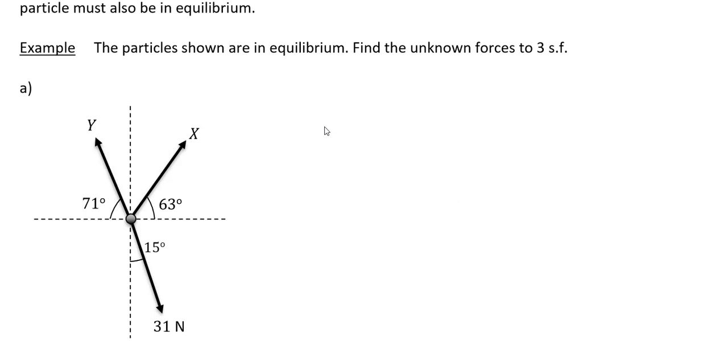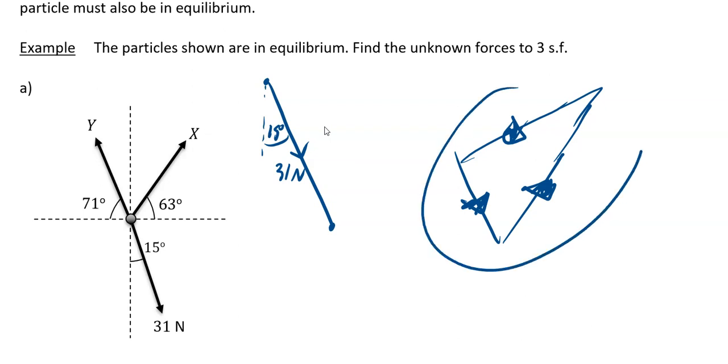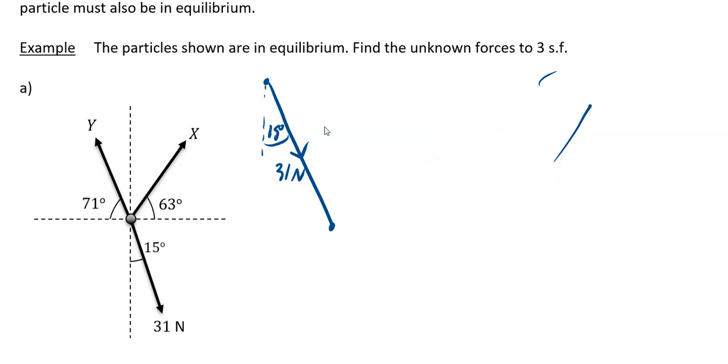I'm going to start by drawing my 31 Newton force. It acts with the vertical, it acts down this way at 15 degrees. That was my 31 Newtons. The arrows, remember if it's in equilibrium, the arrows have to be consistent. So I'm going to have an arrow going this way, and maybe an arrow going this way. And then my last arrow is going to have to get back to the start somehow. Notice they're all going the same way, they're all going anti-clockwise. So that's what we're going to do here.